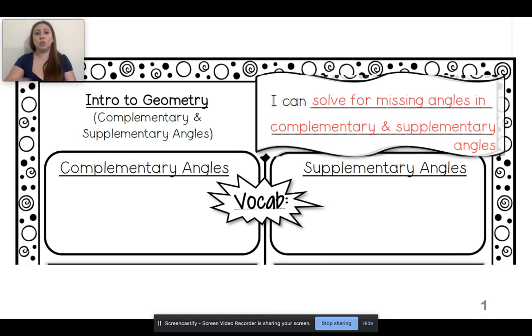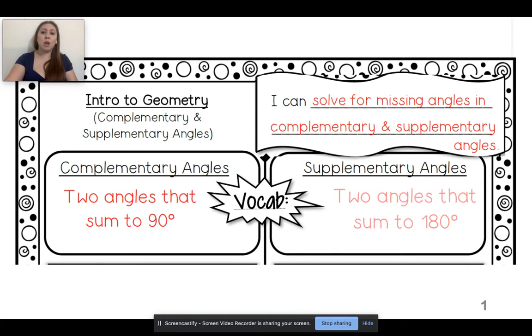Today we're going to be dealing again with putting angles together. So what should you be able to do? I can solve for the missing angle in complementary and supplementary angles. What is a complementary angle? It's two angles coming together, and when I add those two angles up, it's going to equal 90 degrees.